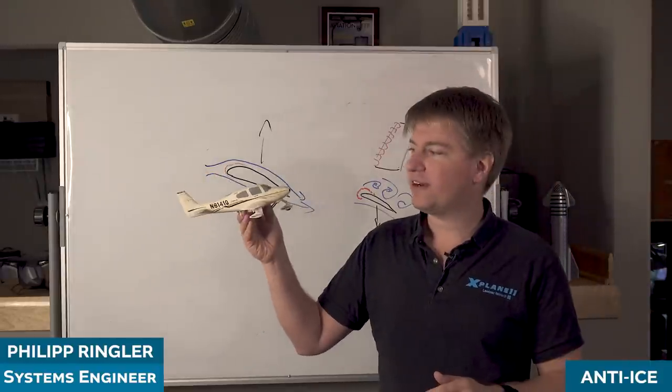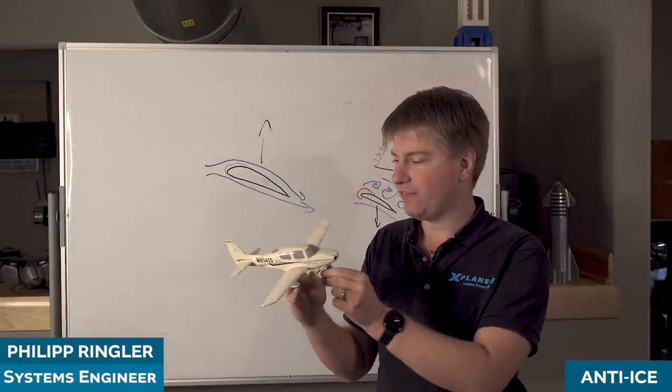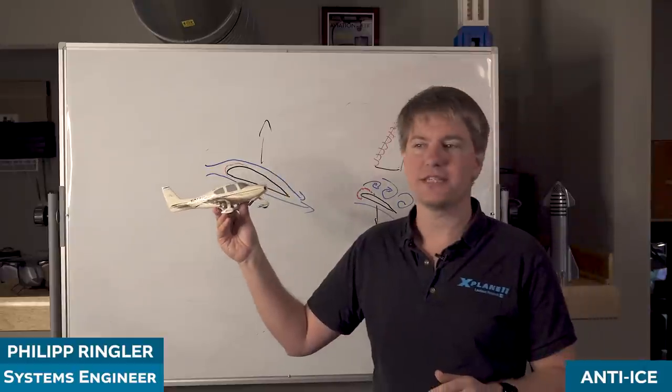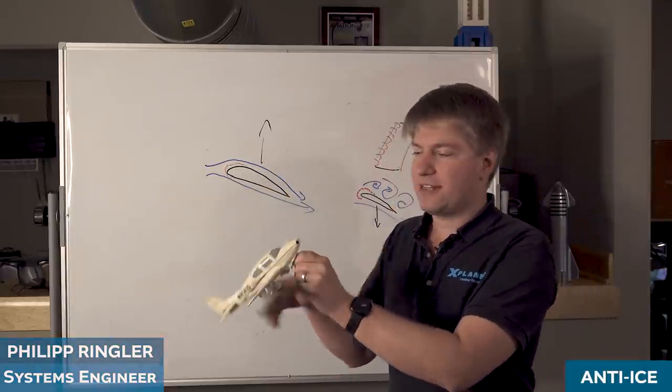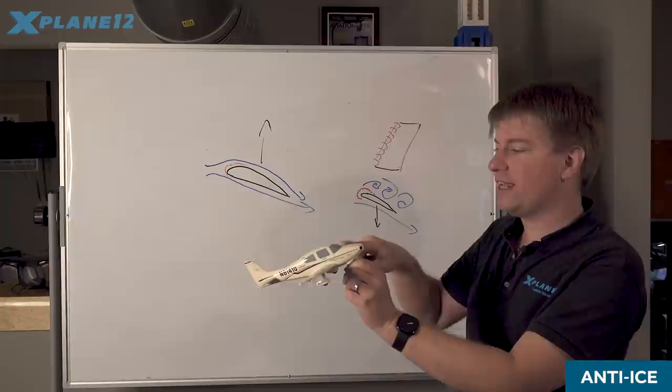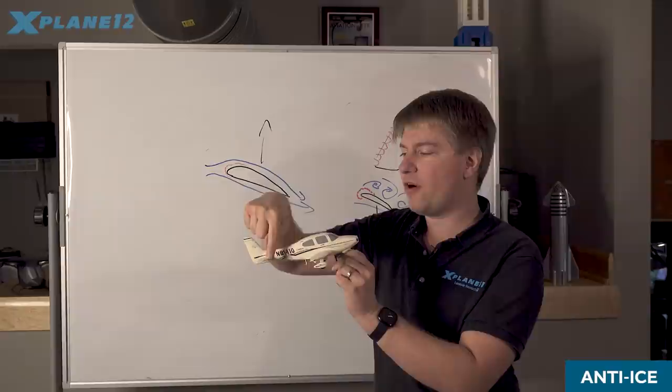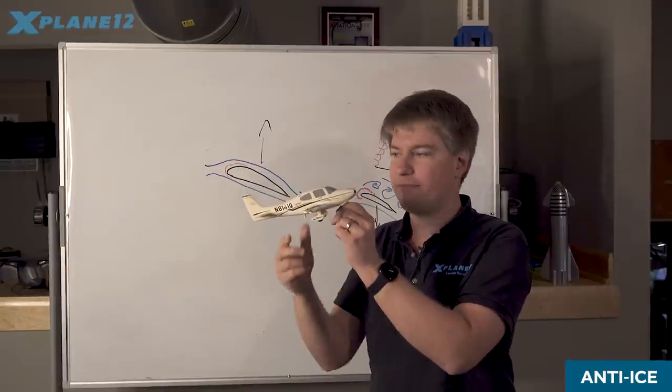This is one of the new default aircraft that we have in X-Plane 12. Our Cirrus in X-Plane 12 is equipped with flight into known icing protection. That means it not only protects the wings from accumulating ice, but also the horizontal stabilizer and the vertical stabilizer.